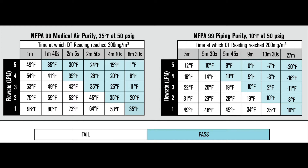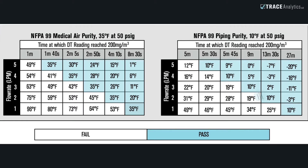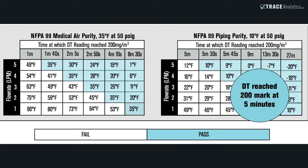Select the appropriate chart, either medical air purity or piping purity. Match up your detector tube flow rate with the time at which the reddish-brown color change reached the 200 mark. For example, a medical air purity sample with a flow rate of 5 LPM when the DT reached the 200 mark at 5 minutes means the sample passes for water.